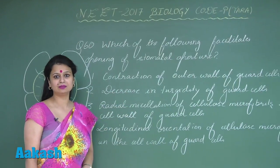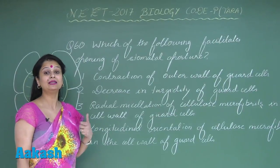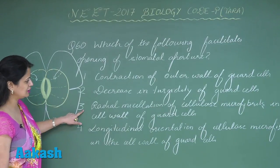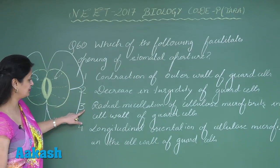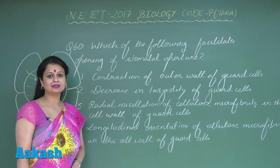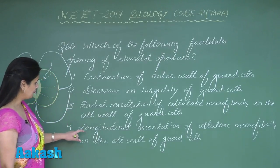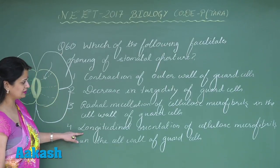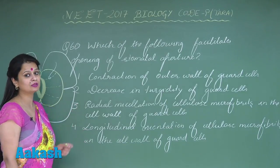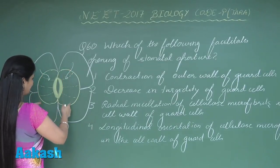The second option, decrease in turgidity, is also wrong — uptake of water leads to an increase in turgidity, not a decrease. The third option, radial micellation of cellulose microfibrils in the cell wall of guard cells, is correct — the micellations are arranged radially. The fourth option, longitudinal orientation of cellulose microfibrils, is wrong — they are not longitudinally orientated.